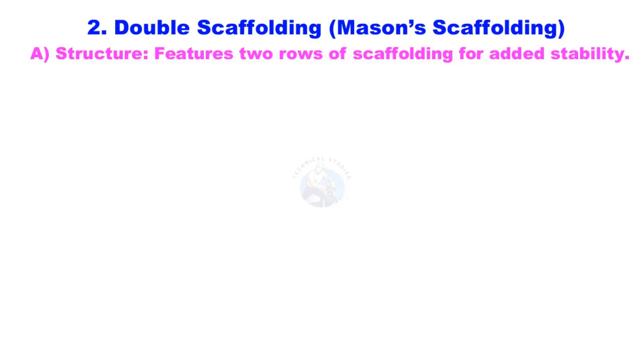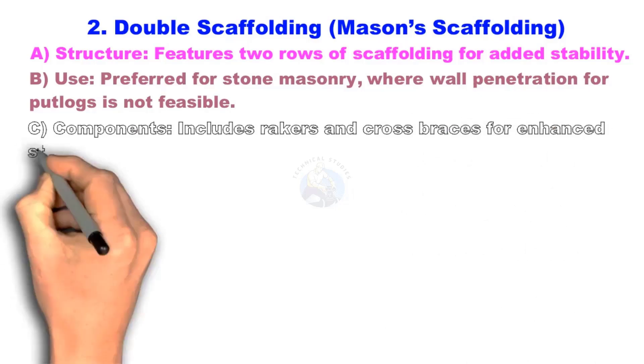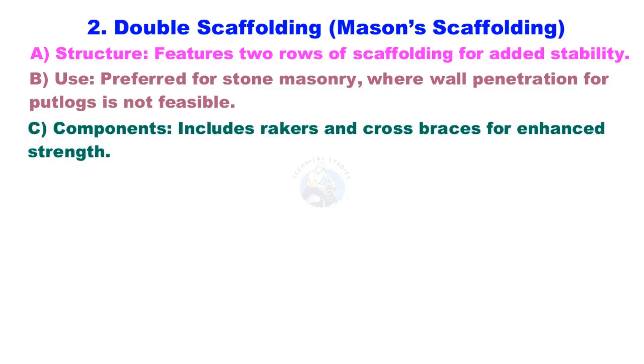Double Scaffolding, or Mason Scaffolding. This features 2 rows of scaffolding for added stability, and is preferred for stone masonry where wall penetration for putlogs is not feasible. Components include rakers and cross braces for enhanced strength.